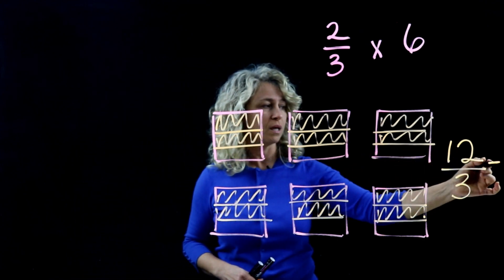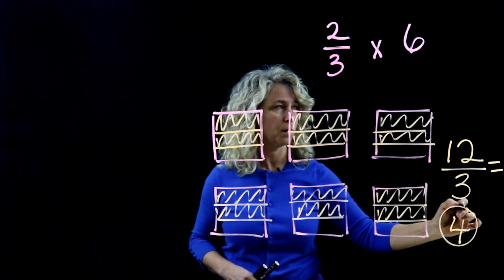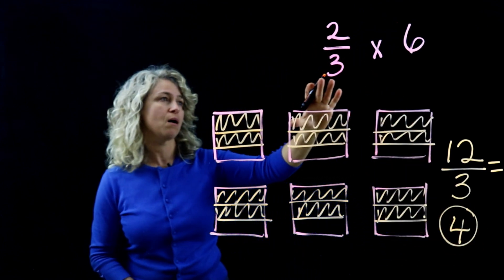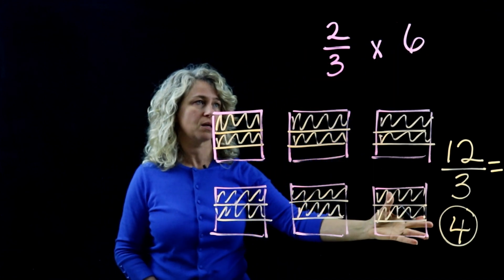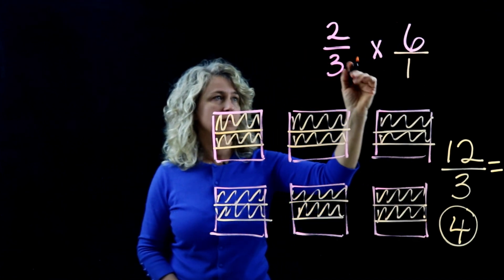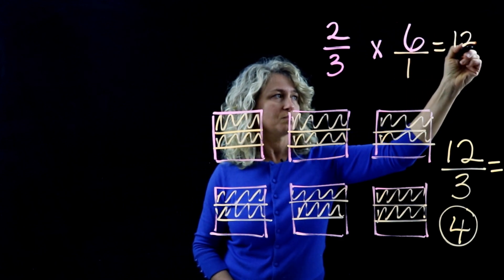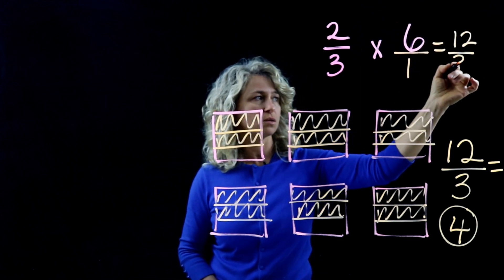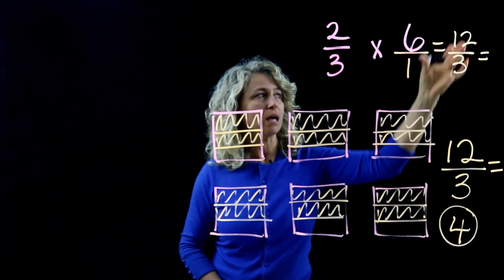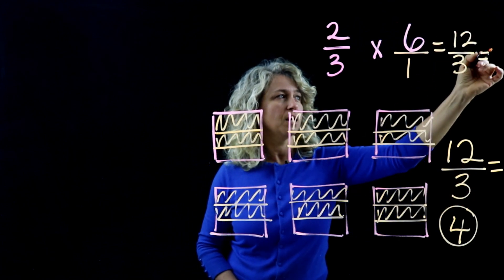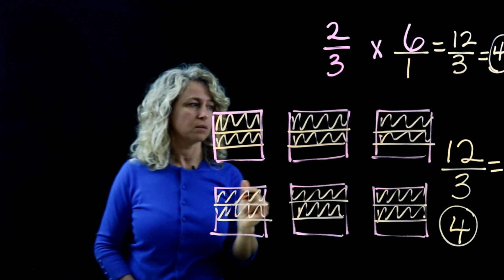Twelve thirds means twelve divided by three, which equals the whole number four. Let's verify: put a one underneath the six, multiply two times six to get twelve, and three times one to get three — giving twelve-thirds. And twelve divided by three is four.